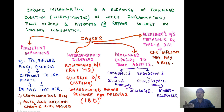So what is chronic inflammation? It is a response of a prolonged duration, okay, around weeks or months, in which inflammation, tissue injury, and attempts at repair are co-existing in varying combination.